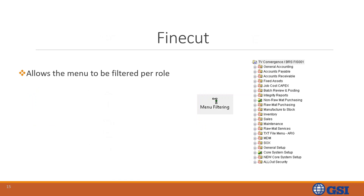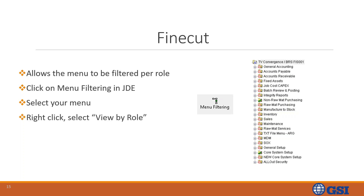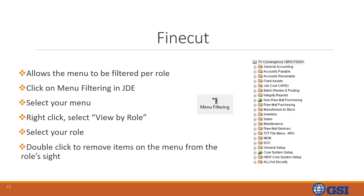What is fine cut? Fine cut allows the menu to be filtered per role. You would click on menu filtering in JDE, select your menu, right-click, select view by role, select the role, and double-click to remove items on the menu from the role. So in the example to the far right, this user would have access to non-raw materials purchasing and core system setup — when the user opens their menu, they would only see those two options.